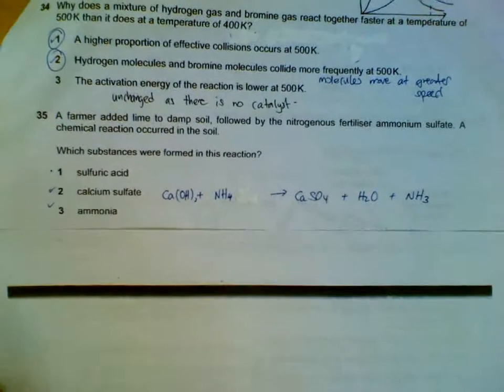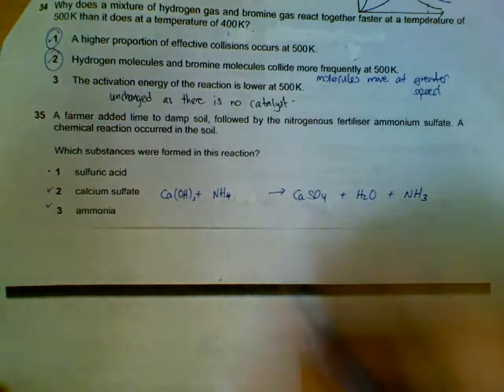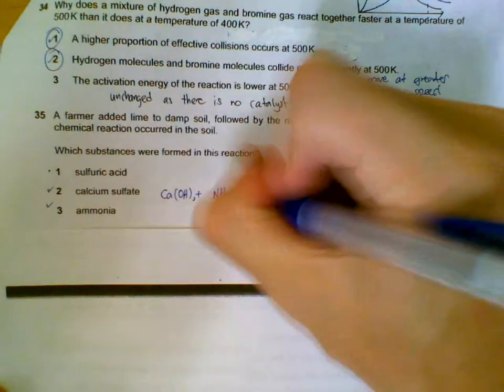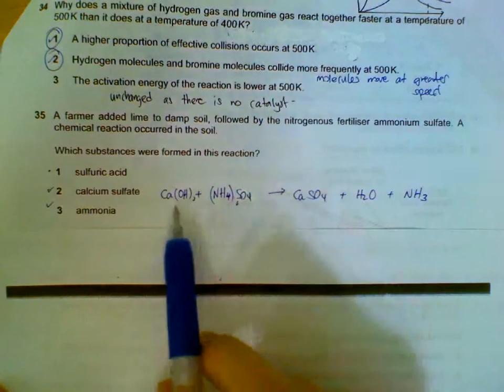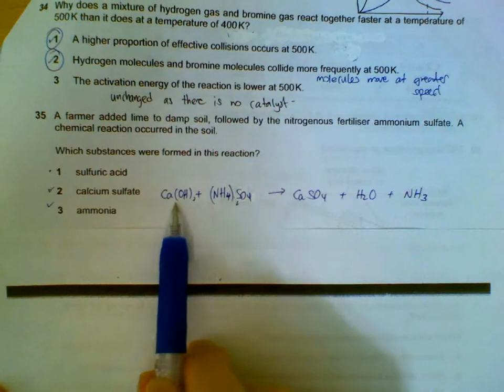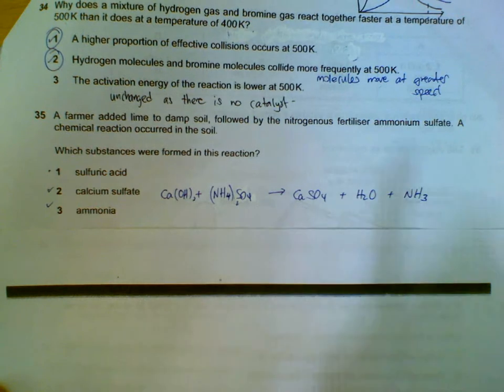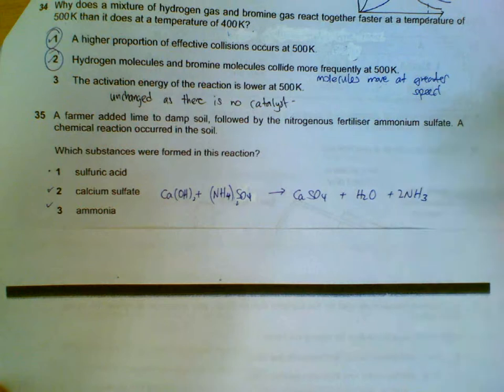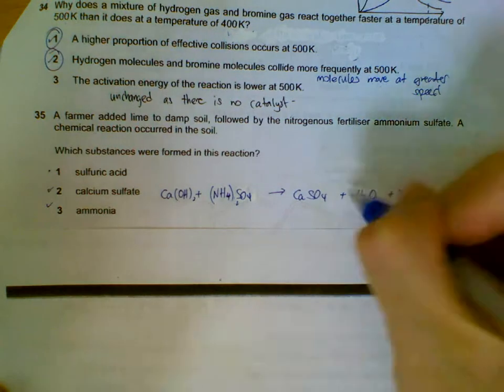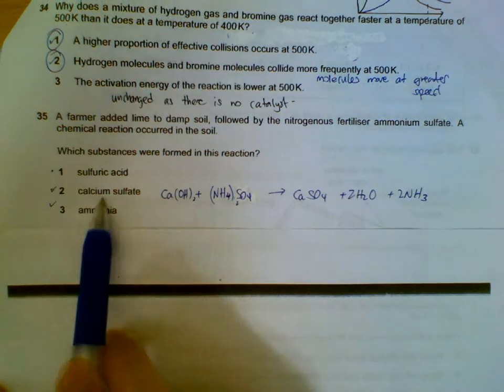Number 35: adding lime to ammonium sulfate. This is a reaction where we have an ammonium salt reacting with alkali base. Ammonium salt gives salt, water, and ammonia gas, so we'll get calcium sulfate and ammonia.